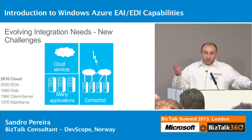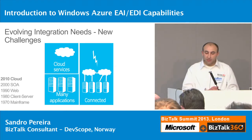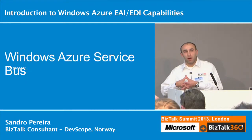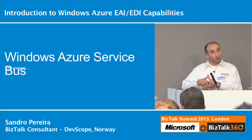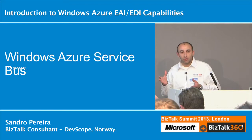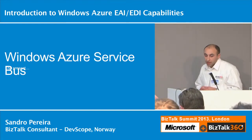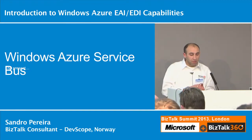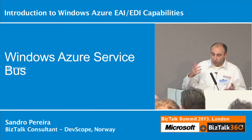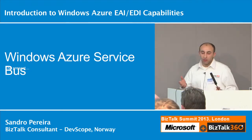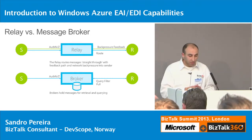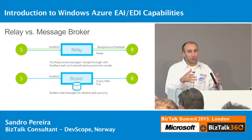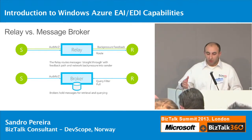Service Bus, as everybody knows, is a message infrastructure that allows applications to exchange messages in a flexible and scalable way. It is maintained by Microsoft with an SLA of 99.9% monthly — basically always on. Service Bus also provides relay and brokered messaging capabilities.